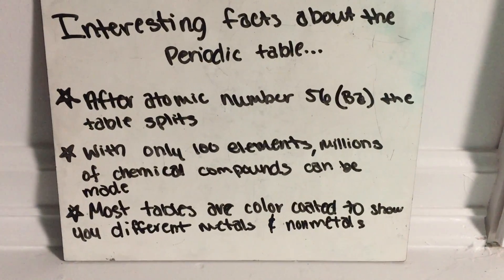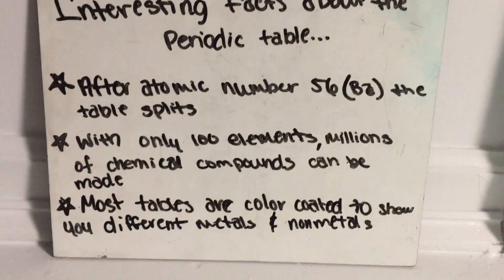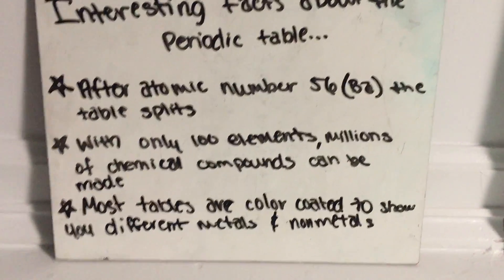After atomic number 56, barium, the table splits. With only 100 elements, millions of chemical compounds can be made.